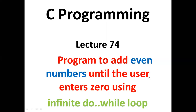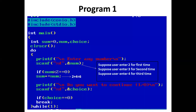Hello students. In today's lecture, we will learn a program to add even numbers until the user enters 0 using an infinite do-while loop. This is Program 1. In the main function, we have declared three integer variables: sum, num, and choice. The sum variable is initialized with value 0. Now the control comes to the do-while loop.